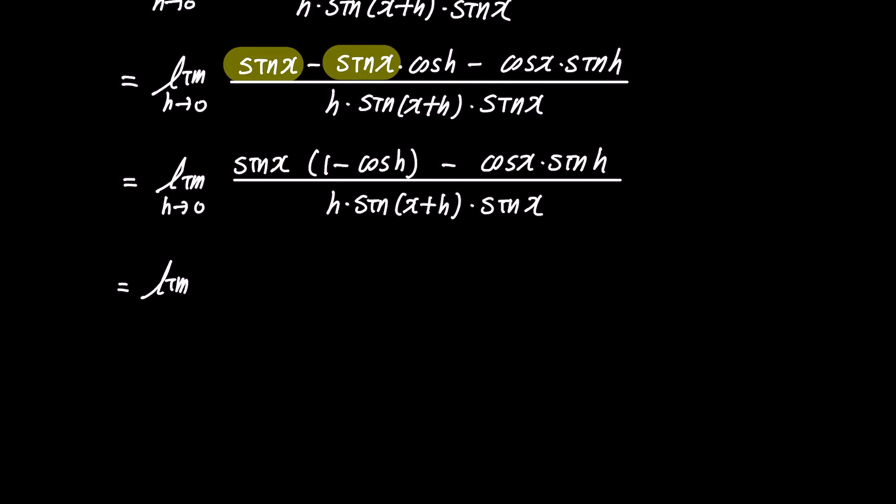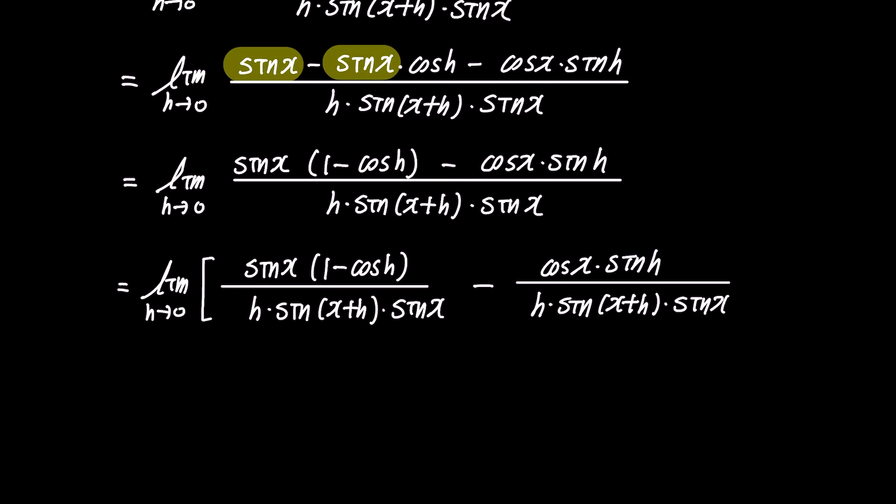Now, let's express this fraction as two separate fractions. This yields the limit of sin x times 1 minus cos h over h times sin x plus h times sin x, minus cos x times sin h over h times sin x plus h times sin x.